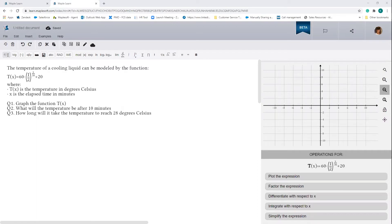In this problem we are told that the temperature of a cooling liquid is modeled over time by the function t of x equals 60 times 1 half raised to the power of x over 30 plus 20, where t of x is the temperature of the cooling liquid in degrees Celsius and x is the elapsed time in minutes.